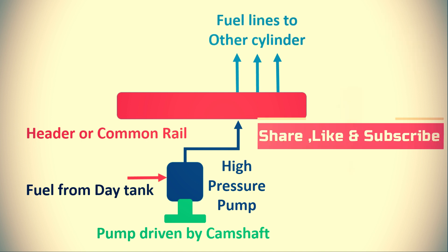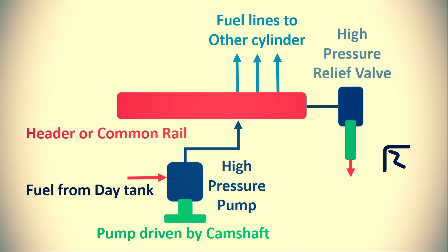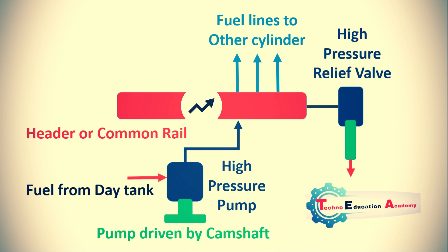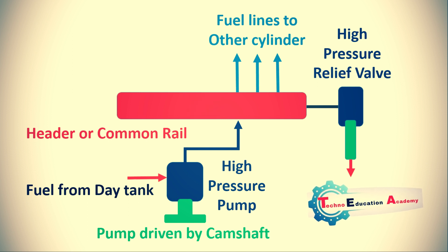The pressure in the common rail is maintained constant throughout with the help of a pressure relief valve. The pressure relief valve is connected with the common rail or header and it controls the pressure.